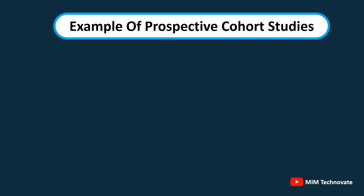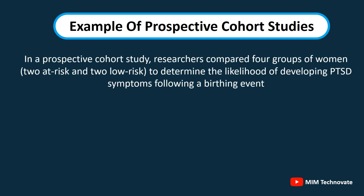Example of prospective cohort studies: Researchers compared four groups of women — two at risk and two low risk — to determine the likelihood of developing PTSD symptoms following a birthing event.